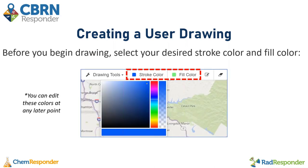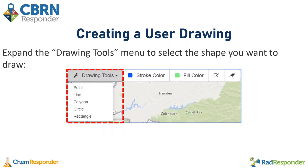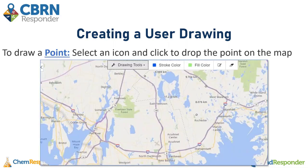Before you begin drawing, you can select your desired stroke or fill color, but you can edit these colors at any later point — so if you just want to get the correct user drawing on there, you can worry about colors later. Open the drawing tools menu to select the shape you'd like to draw. Once you select a drawing tool, a stop drawing button will automatically appear, so when you're finished you can click that to stop drawing your shape.